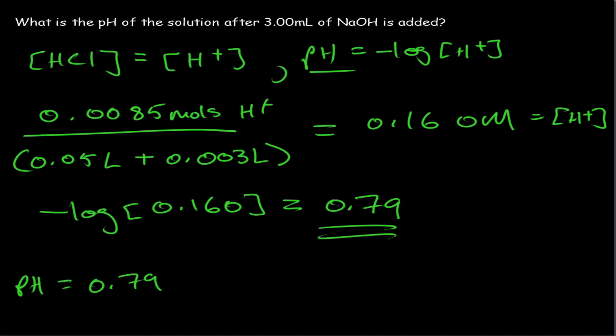And does that make sense? Yes, it does. Our initial pH was 0.69, which was a little bit lower, meaning it was a little more acidic. Now that we added a little bit of base, the base reacted with the acid and caused the pH to increase slightly, because we removed a little bit of the protons from the solution.